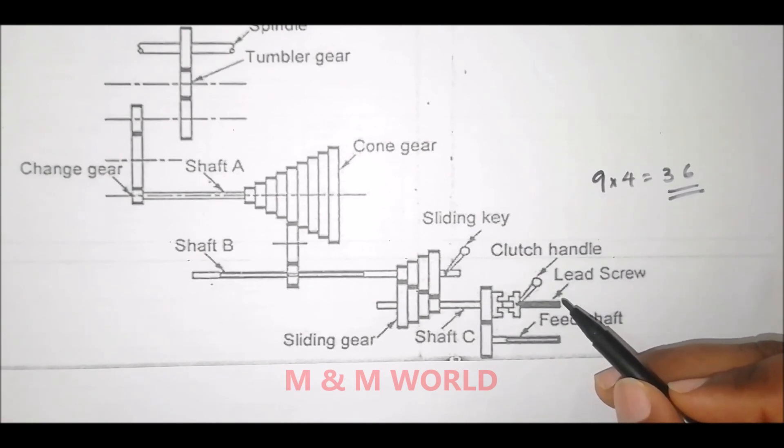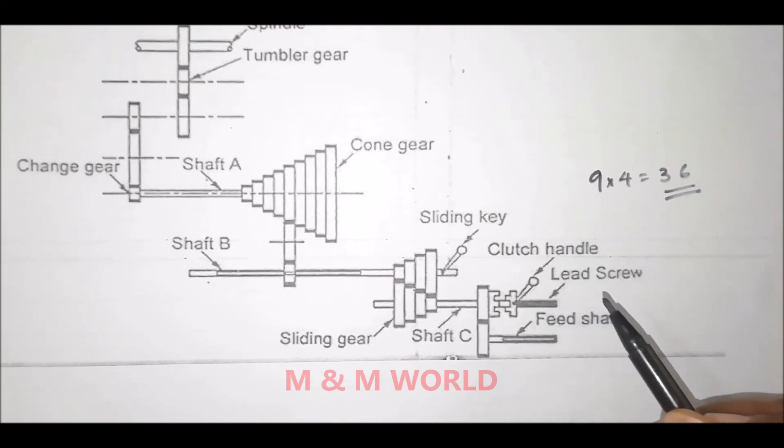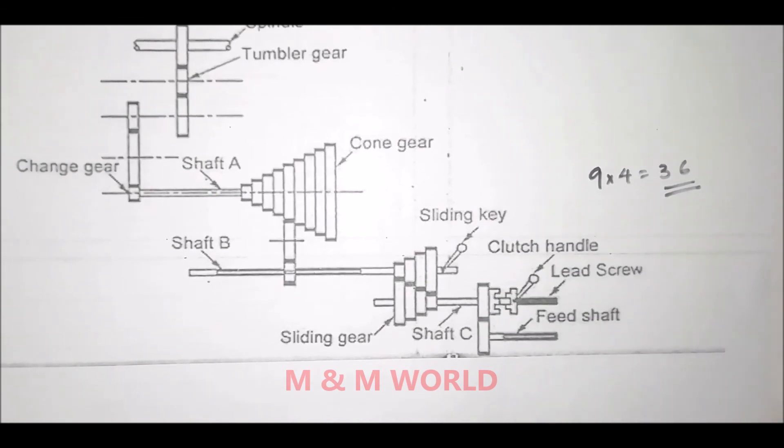The lead screw is brought into operation only when threads have to be cut. All other times the lead screw is disengaged and remains stationary.